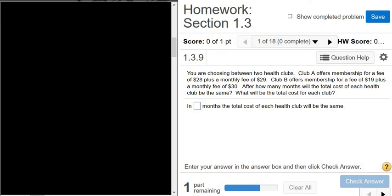You are choosing between two health clubs. Club A offers membership for a fee of $28 plus a monthly fee of $29, and Club B offers membership for a fee of $19 plus a monthly fee of $30. We want to know after how many months will the total cost of each health club be the same, and what will be the total cost. We have two different clubs.